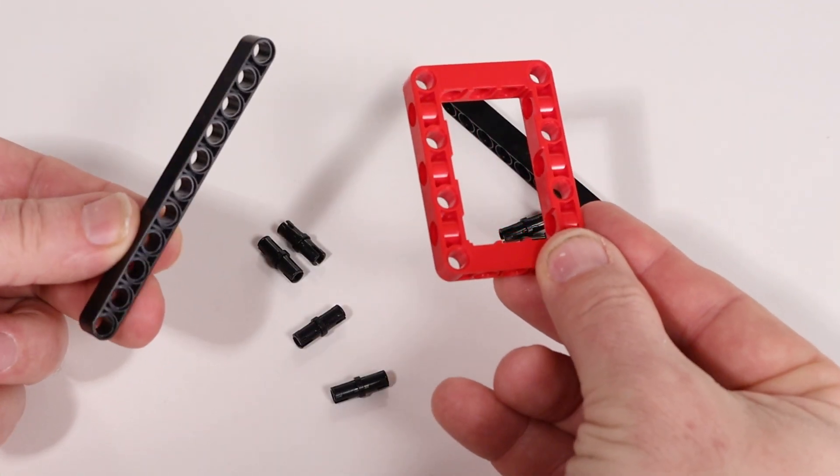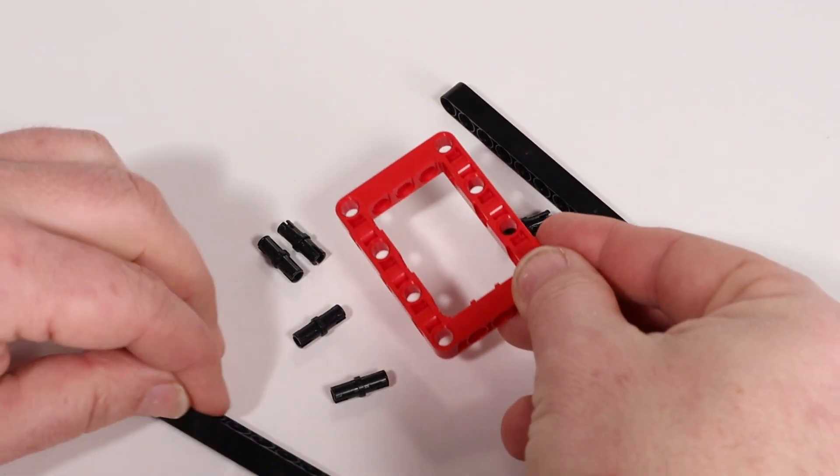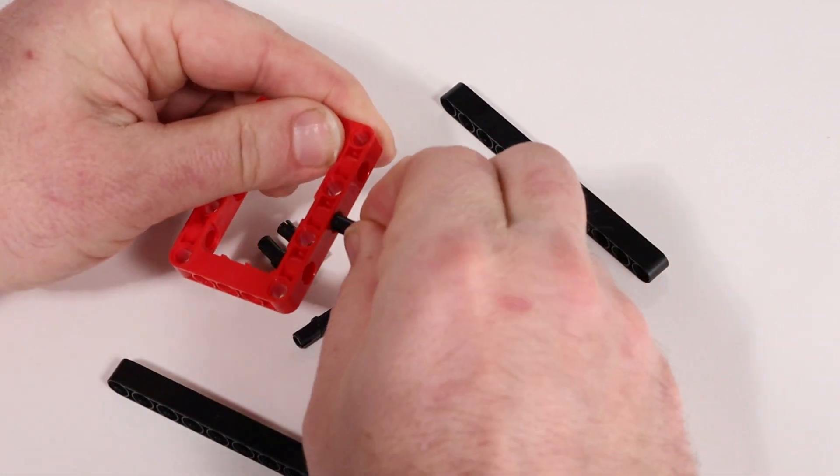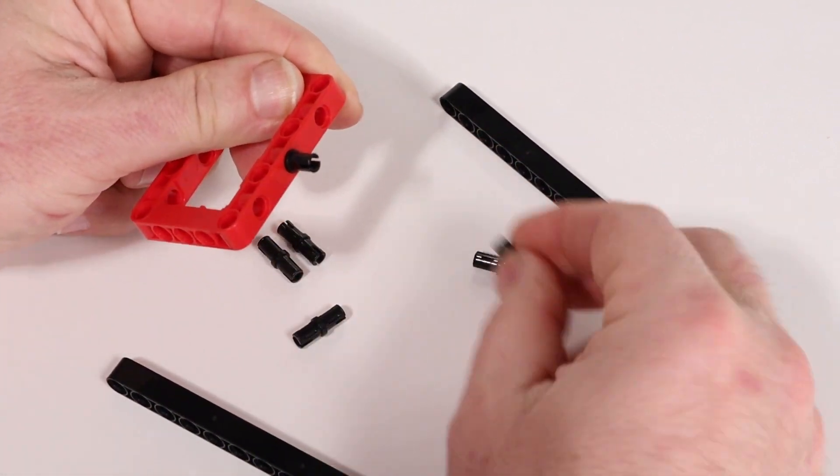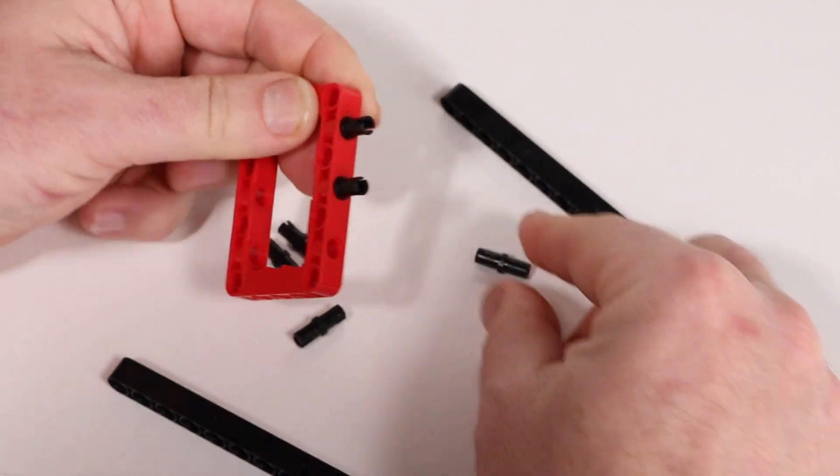We'll begin by assembling the bottom frame. Take one of these red frames and insert a short black pin into each of the three holes on the side.